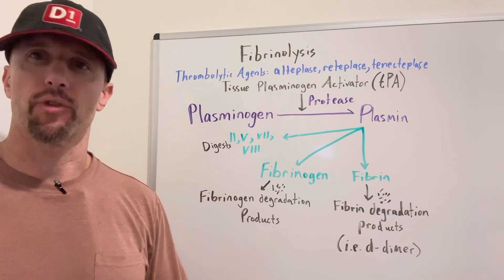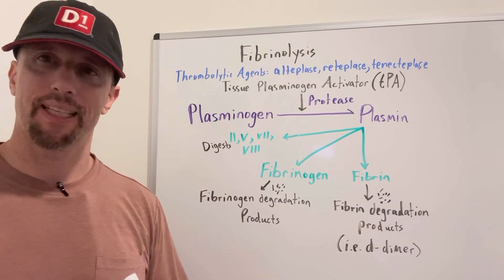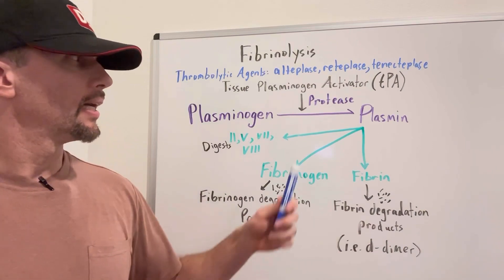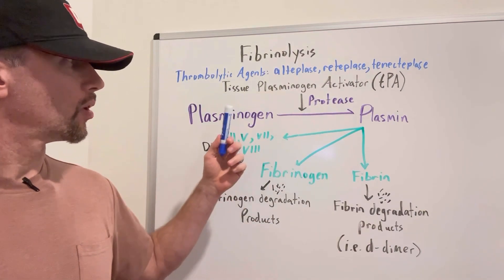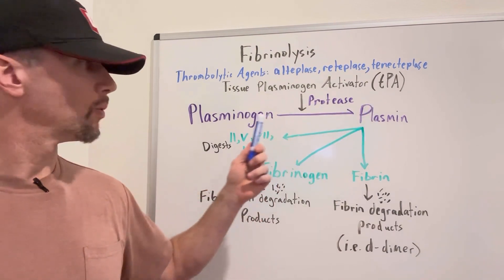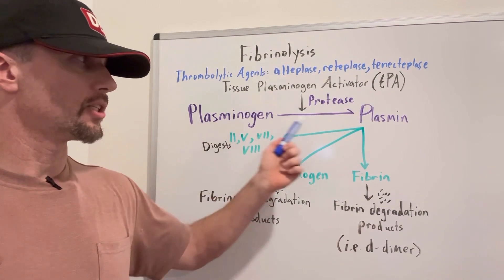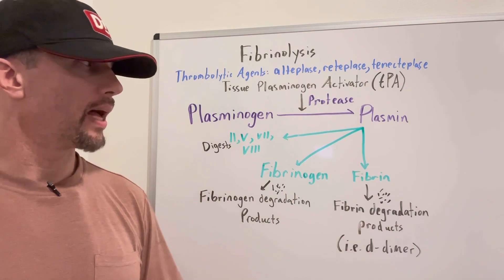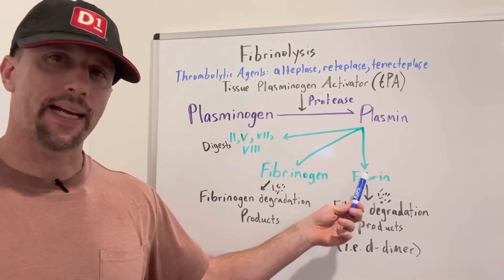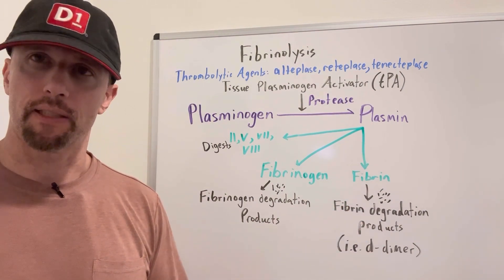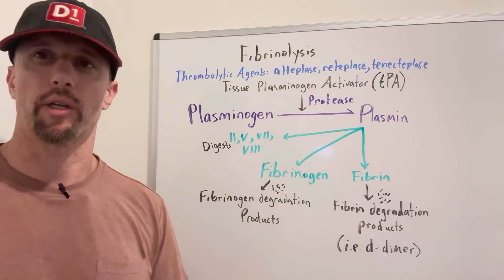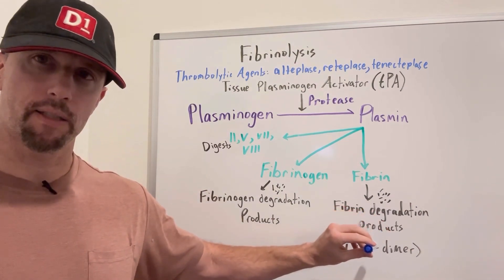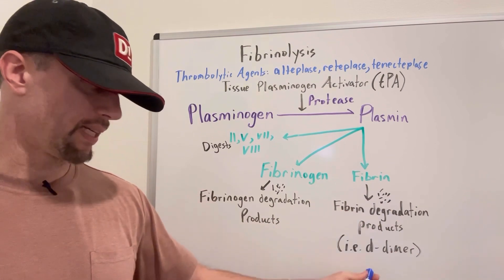Endogenously, TPA is released typically from the endothelial cells in response to injury. The protease, TPA, will go and break down plasminogen into its active form of plasmin, and then plasmin will go and break down fibrin within the clot that's holding that insoluble meshwork together. It breaks it down into fibrin degradation products, one of those being D-dimer.